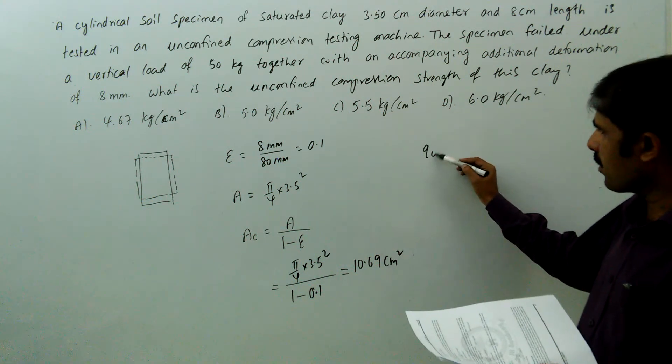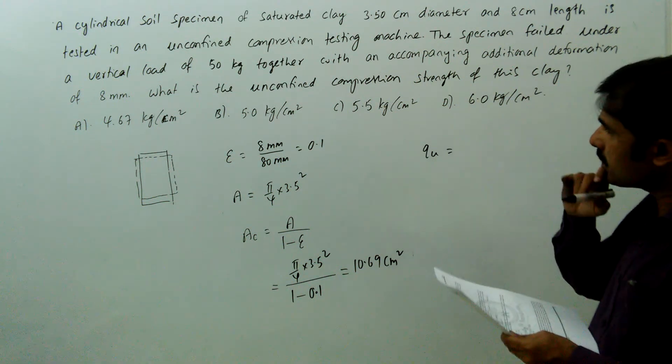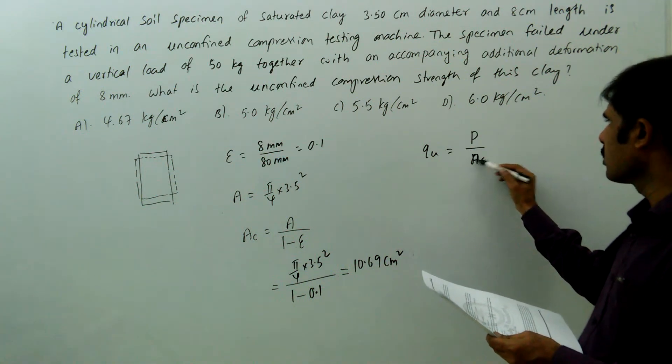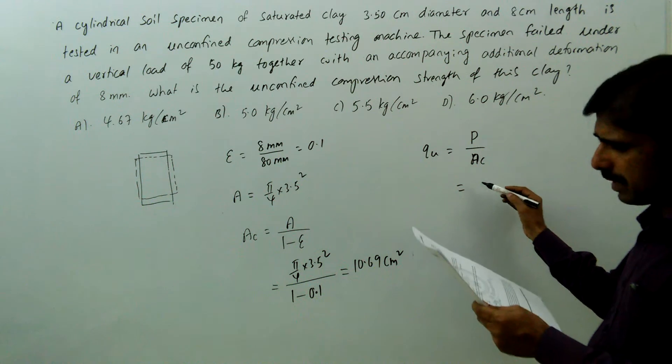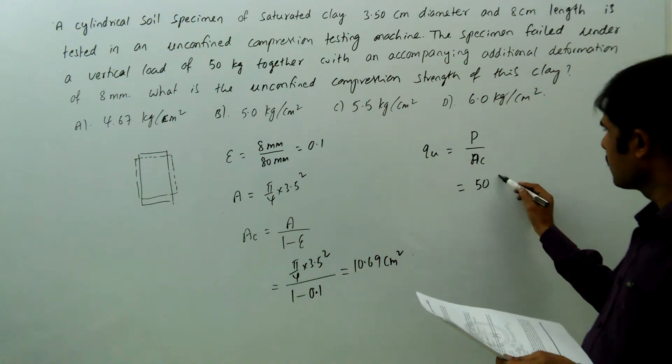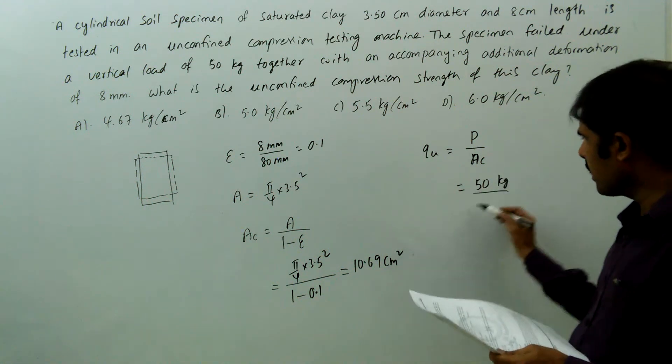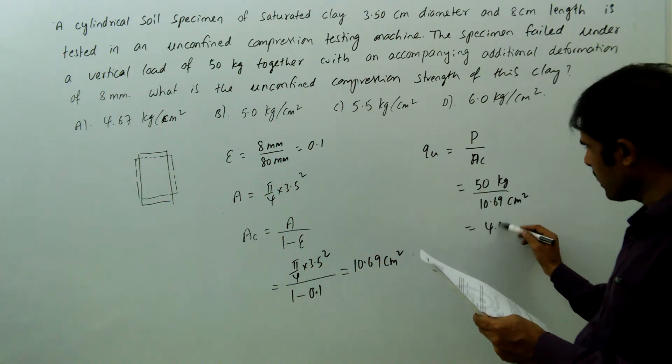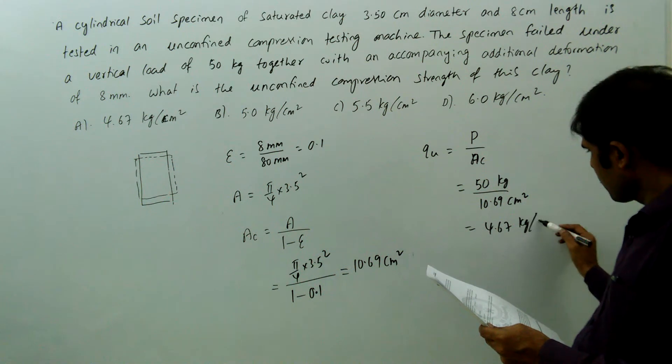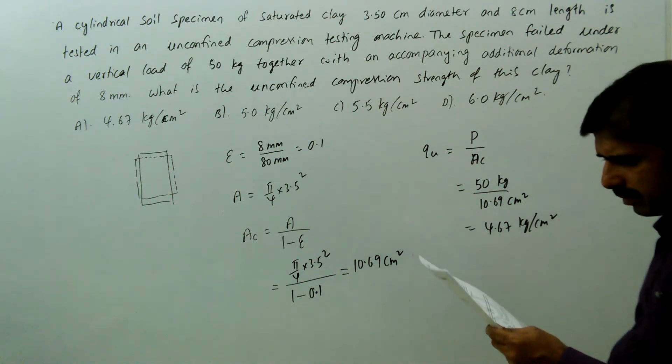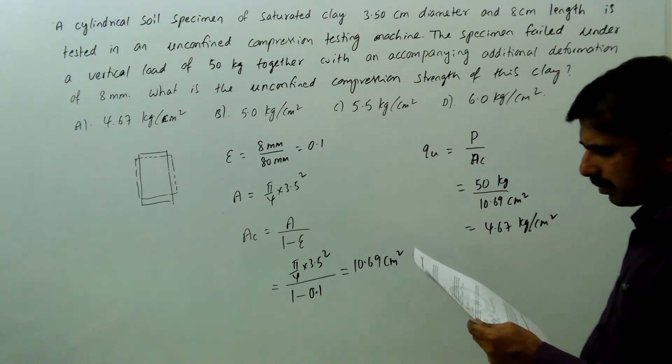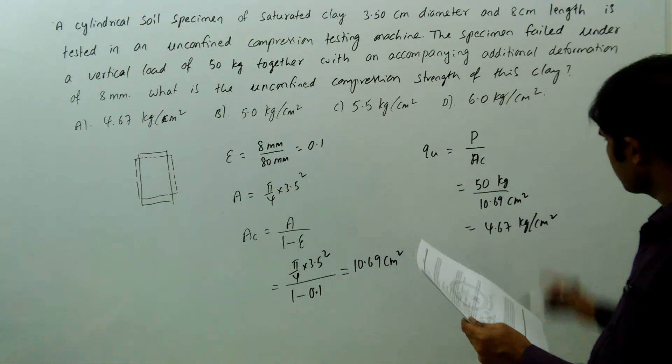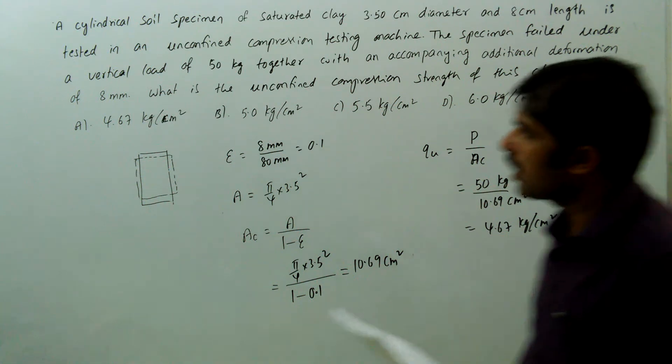Now unconfined compression strength equals load by corrected area. Load is 50 kg by corrected area 10.69 cm square, so the strength is 4.67 kg per cm square. That is option A.